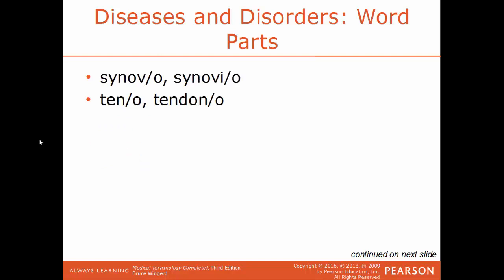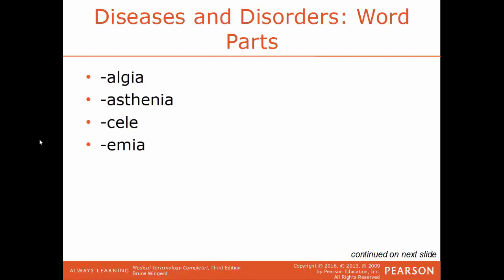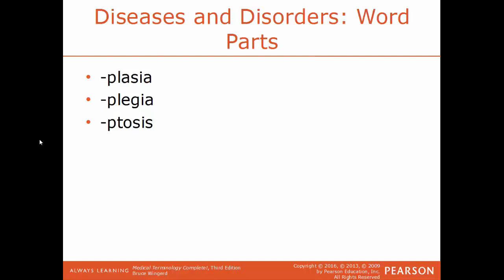Synovio refers to synovial fluid or membrane; tendino refers to tendons; algea means pain; asthenia means lack of strength; the suffix -cele means hernia; -emia means blood condition; -genesis means formation or creation; -itis means inflammation; -malacia means softening; -oma means tumor; -osis means abnormal condition; aplasia refers to formation or development; the suffix -plegia means paralysis; and -ptosis means drooping, sagging, or protruding.